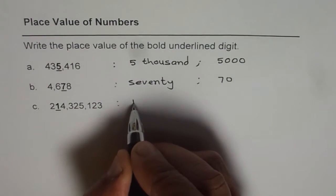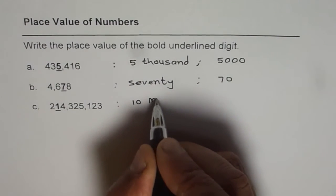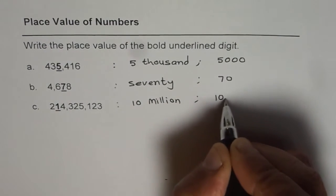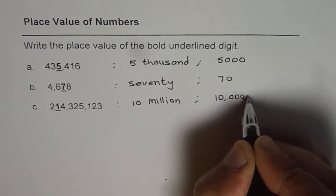So this is 10,000,000. Or you can write 10, 6 zeros.